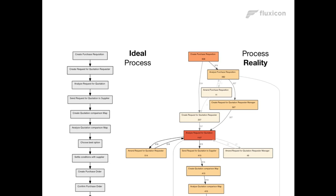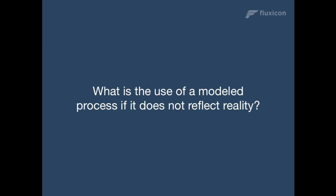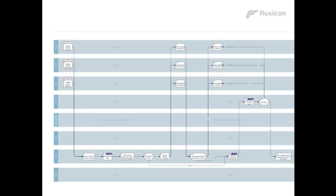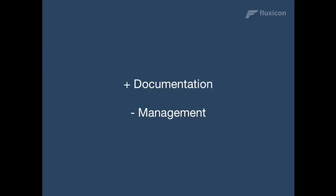If there's this discrepancy between the ideal process and the actual process, we have to think about what's the use of all these process models we are creating if they are not reflecting reality. Organizations spend enormous amounts of money documenting all their processes. Here's an example from one of our projects where the process manager had a problem with his process, and we were analyzing it with process mining. While we were talking about these problems, he brought out the documented process as a huge wallpaper, put it on the table, and said, 'Well, that's not actually our process.' People know that there's this discrepancy.